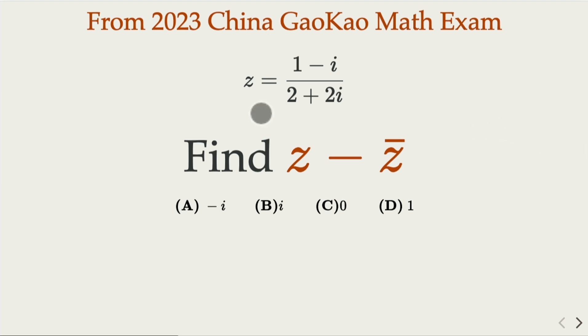Now here we are given z, which is a fraction of 1 minus i over 2 plus 2i. Of course, i is the imaginary unit.